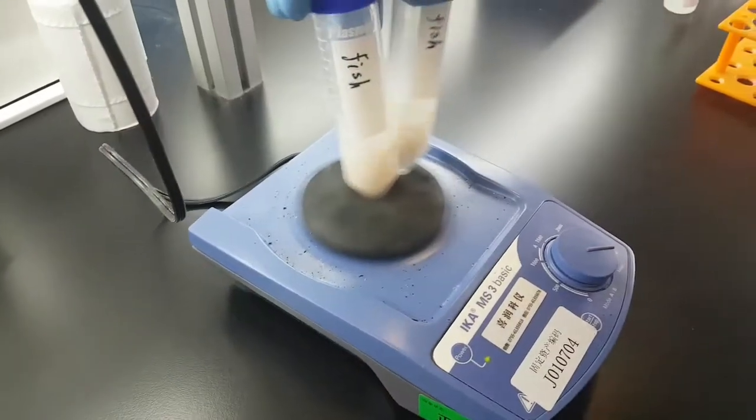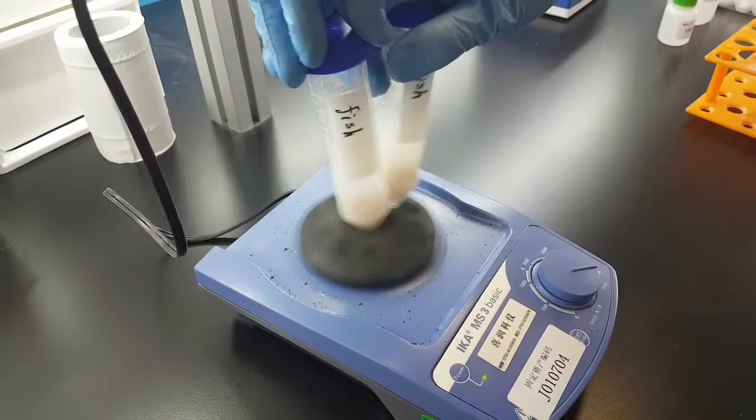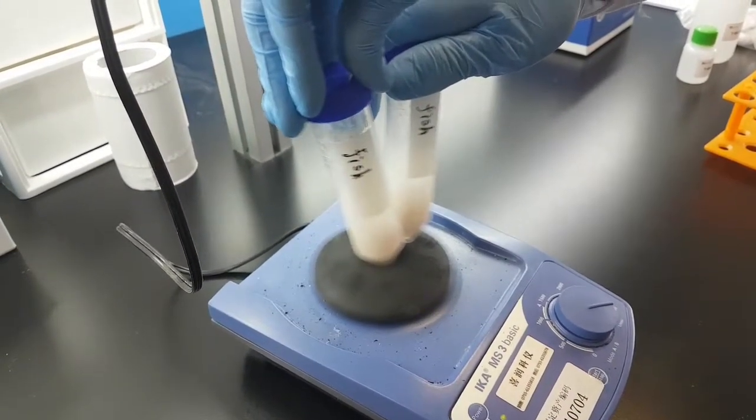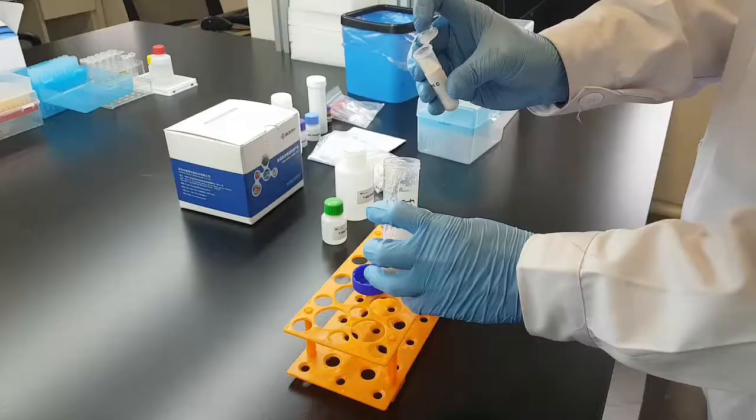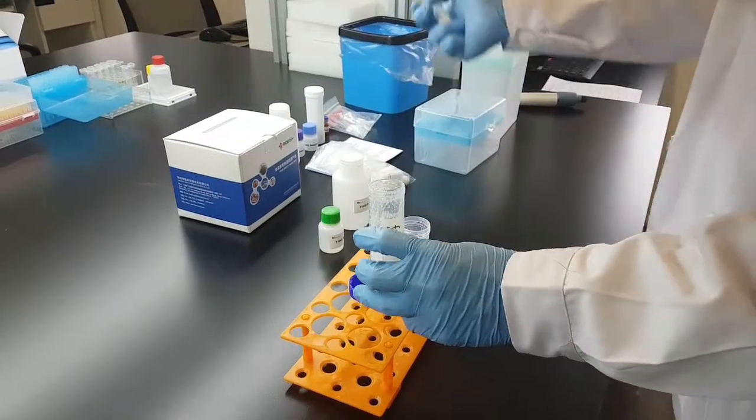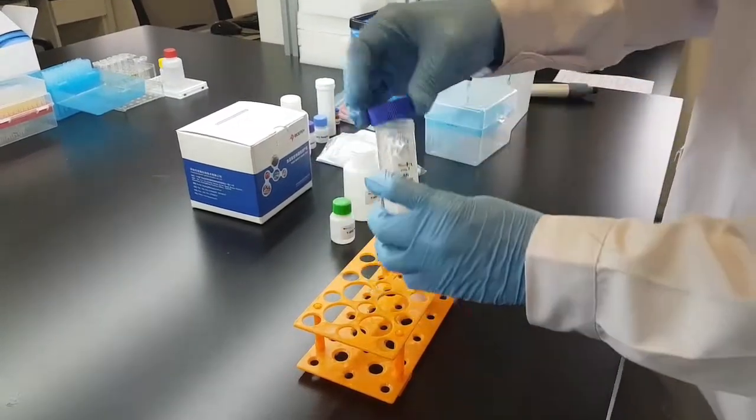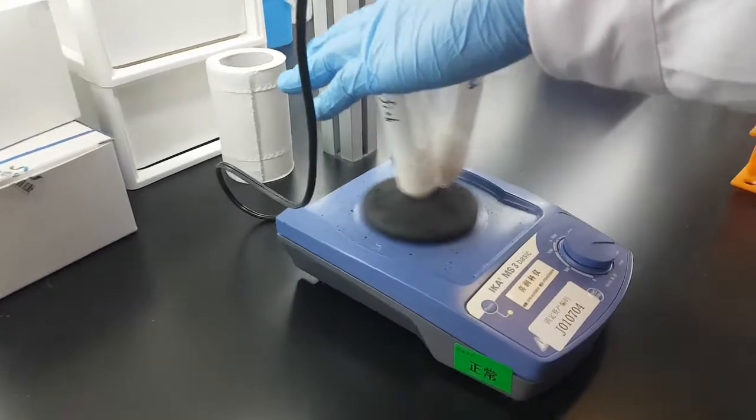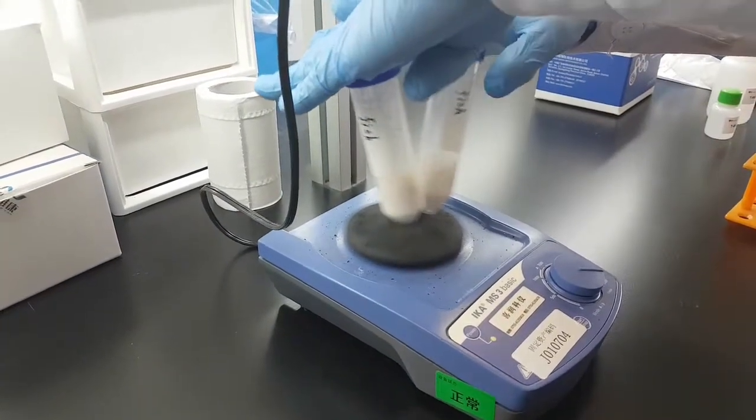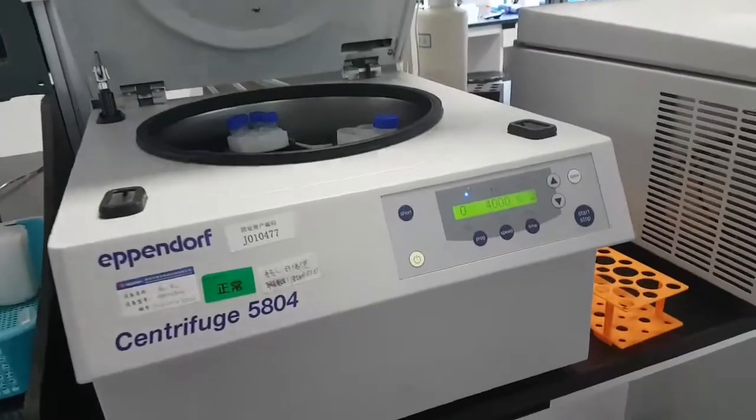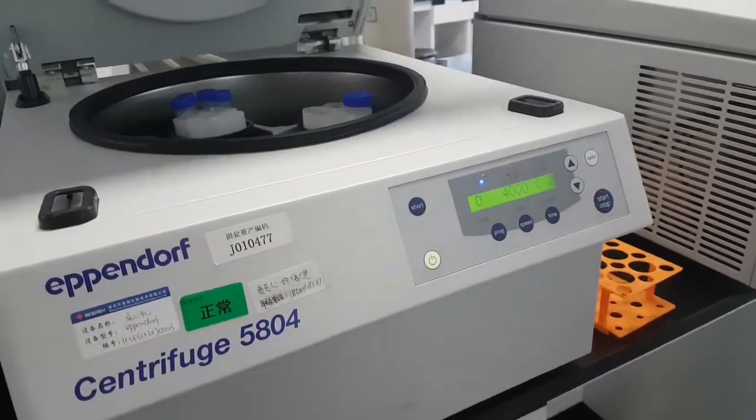Vortex for 20 to 30 seconds at 2000 to 3000 rpm. Now we add reagent C. Vortex for another 15 seconds at the same rpm level. Centrifuge for two minutes at 4000 rpm.